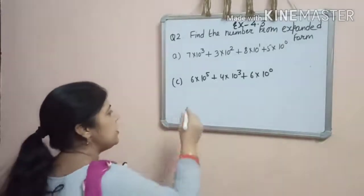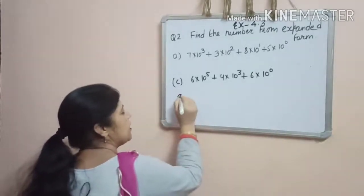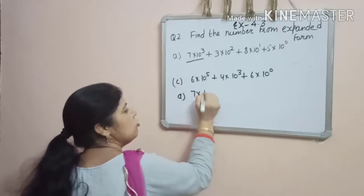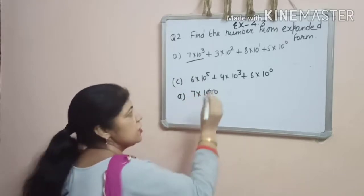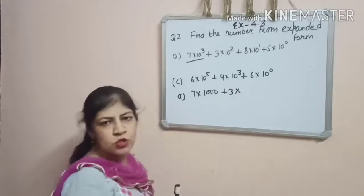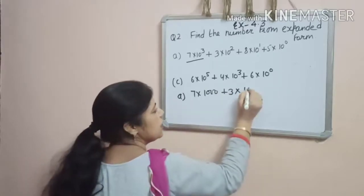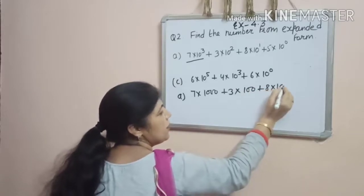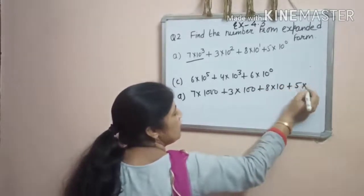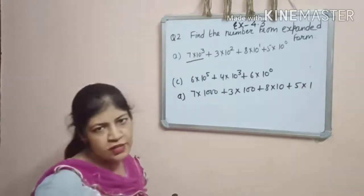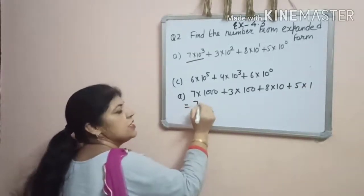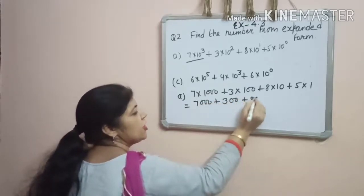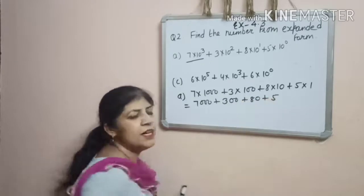Here, 7 into 10 raised to the power 3 means 7 into 1000. Plus 3 into 10 raised to the power 2 means 100. 8 into 10 raised to the power 1 means 10. And 10 raised to the power 0 means 1. So it becomes 7,380 plus 5.